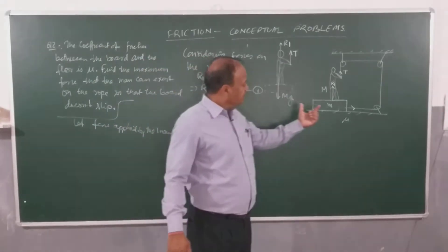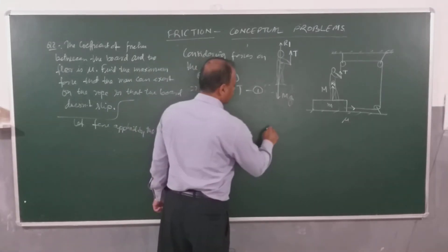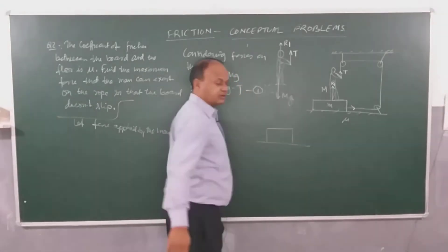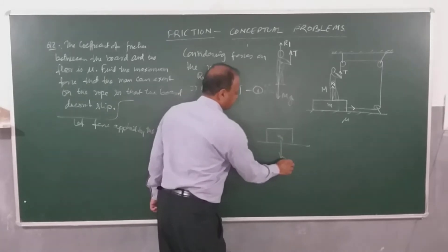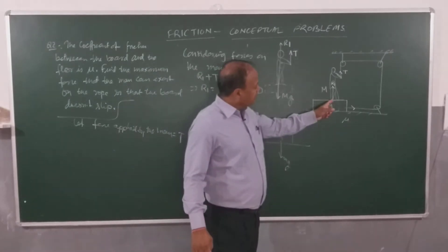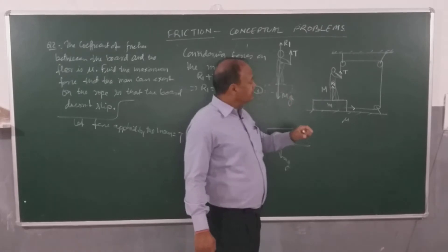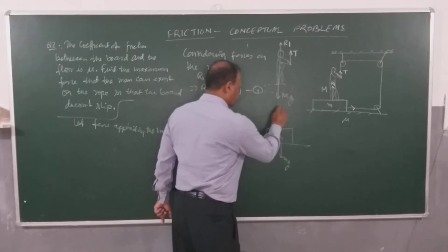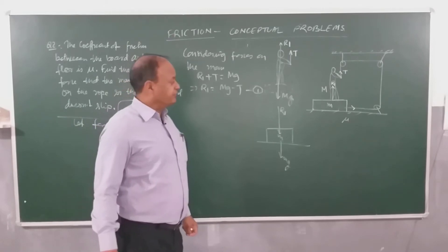Now studying the FBD of the block: the block is resting on the floor. Its weight small mg acts downward. The man is standing on the block, so the man pushes the block downward with force R1. This is crucial to understand — R1 acts downward on the block from the man above.